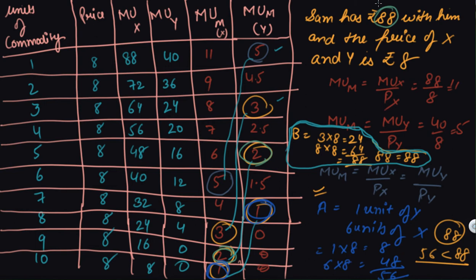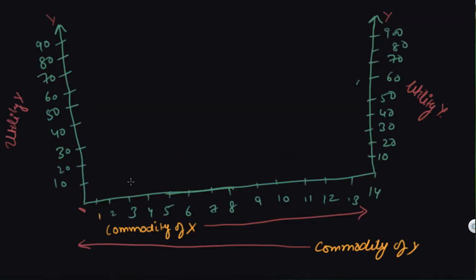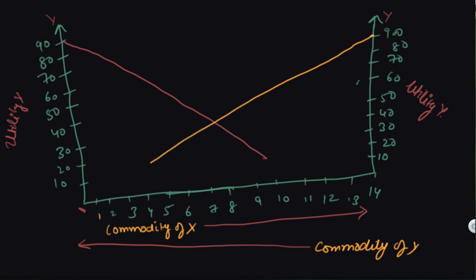Now let's look at the graphical representation. We plot commodity X and commodity Y on the same graph. As we've seen in previous lectures, the marginal utility curve slopes downward as consumption increases. This downward-sloping curve applies to MU_x and similarly to MU_y. The marginal utility of money is constant, represented as a horizontal line.